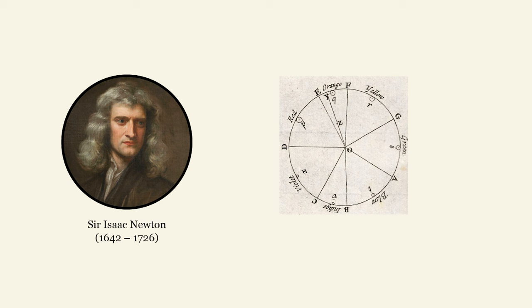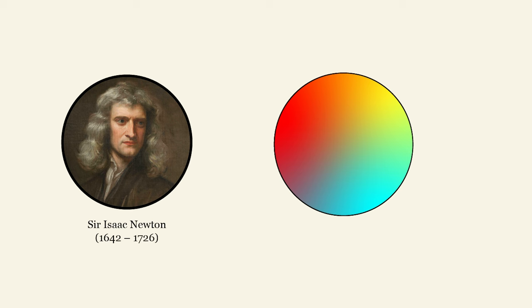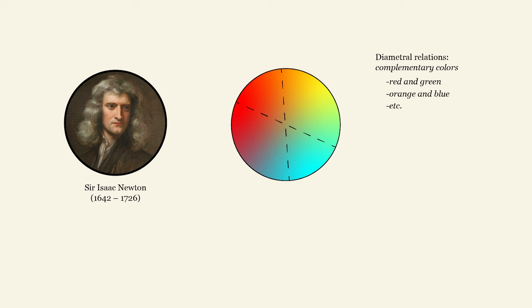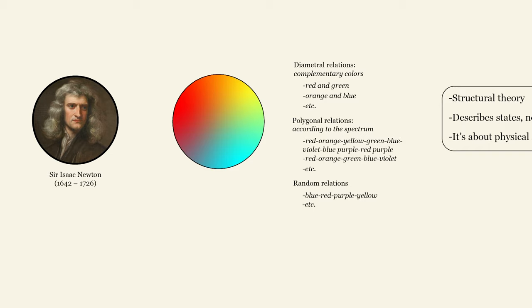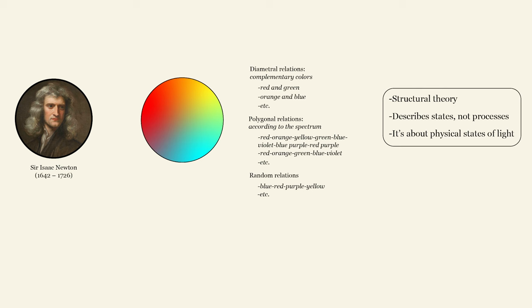Newton famously describes the classical theory of colours in the chromatic circle, where relations between colours can be described very adequately in spatial terms. Deleuze identifies three such types of relation: diametrical relations, which define complementary colours; polygonal relations, by which a logic can be defined as a rule of passage from one colour to another according to the spectrum; and then there are random relations. However, because the chromatic circle can only describe states or structures, it does not show the genetic aspect of colour — that is, how colours come to be, their profundity as it were.